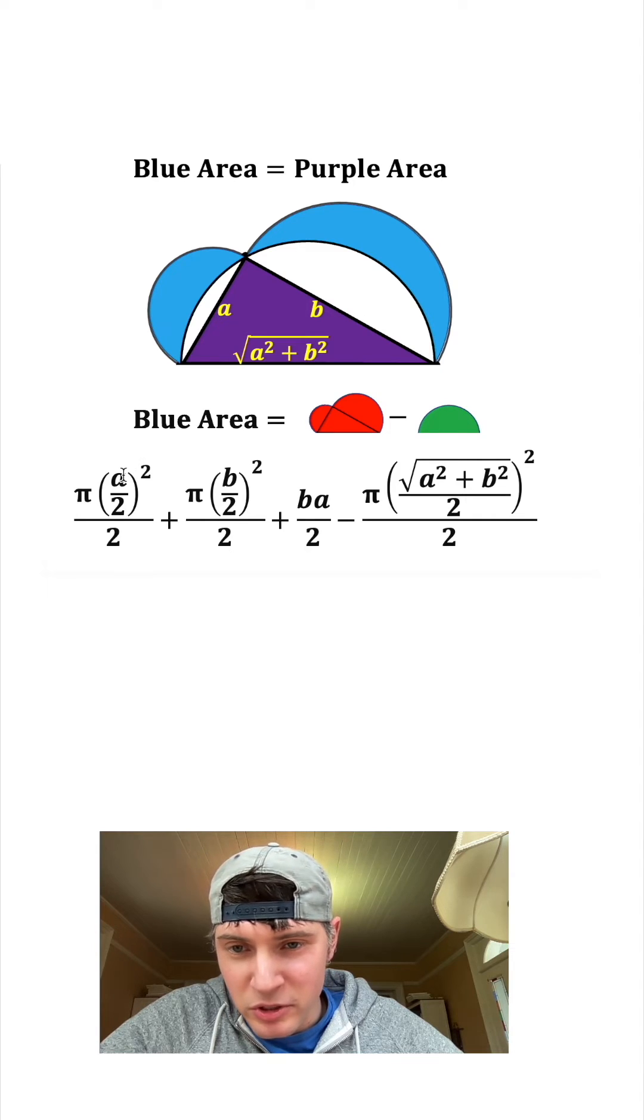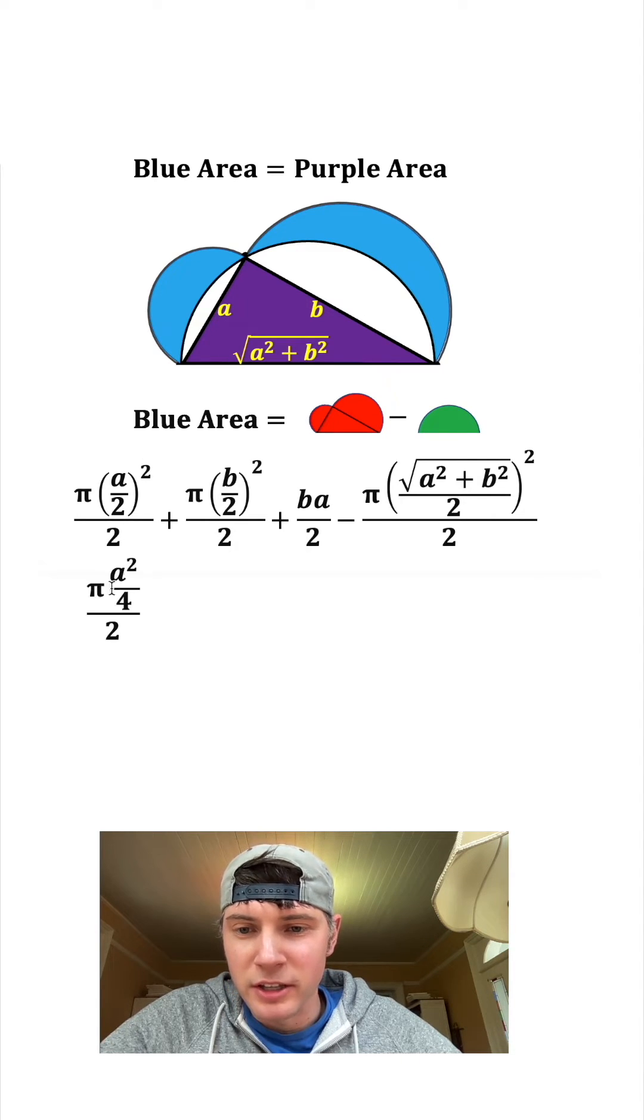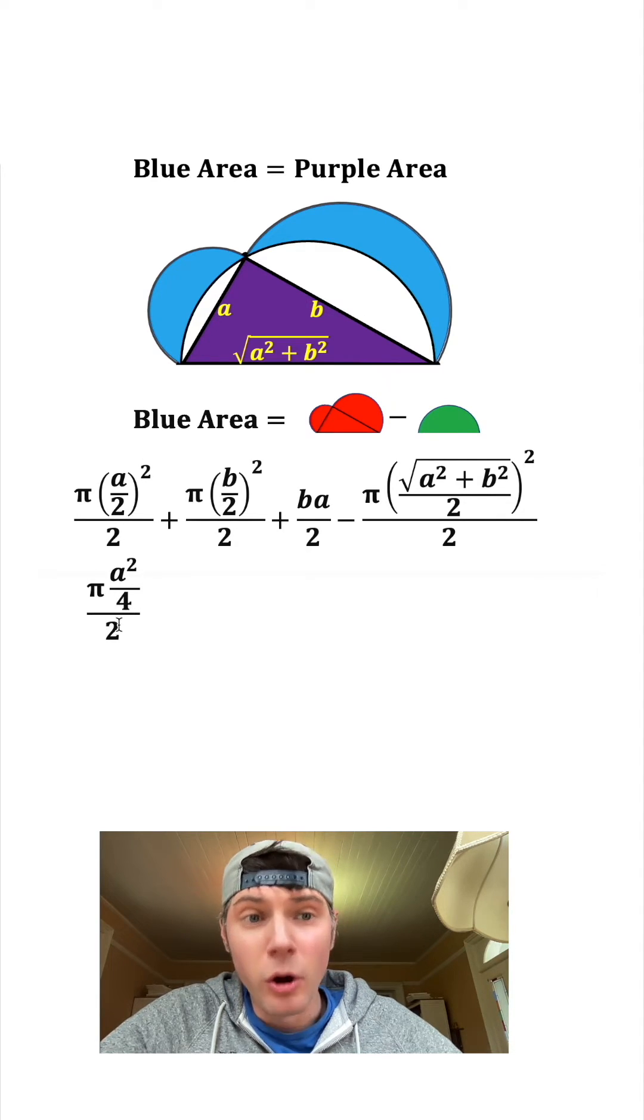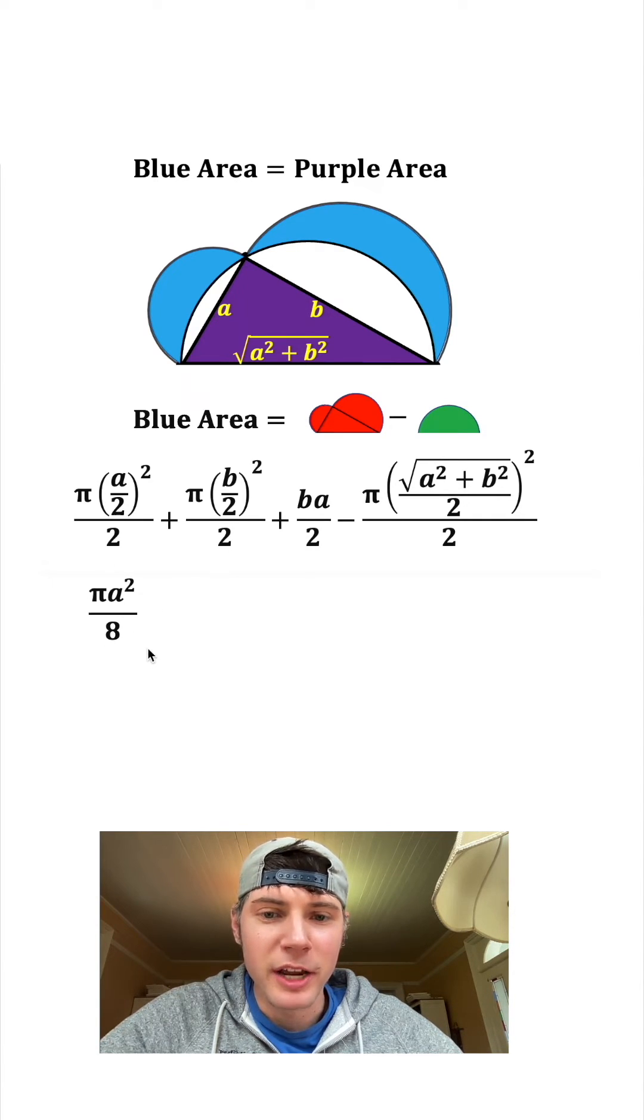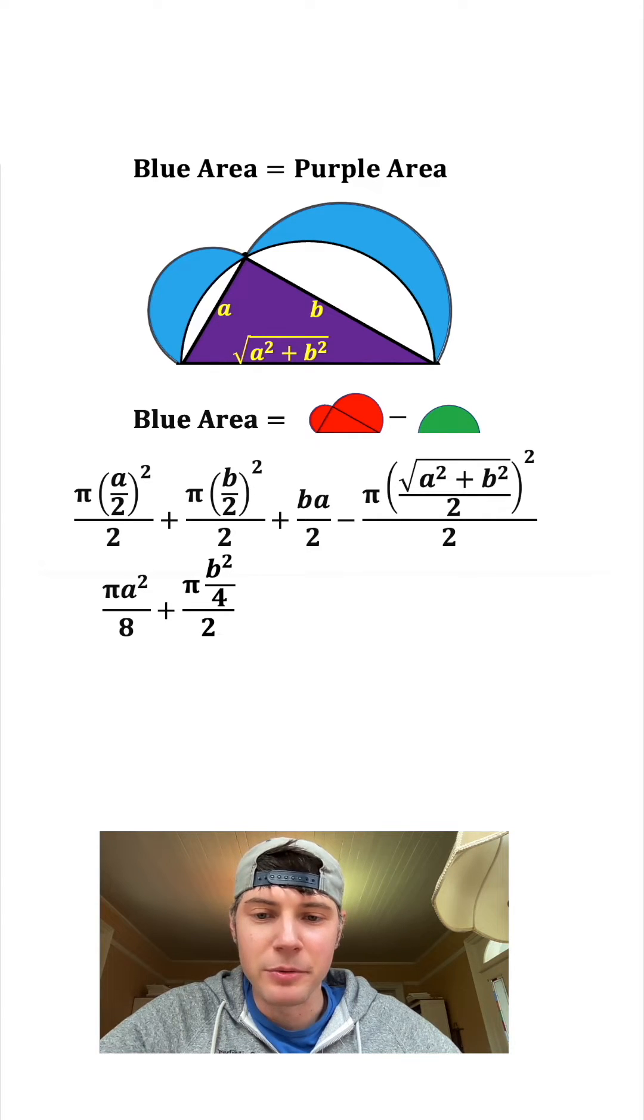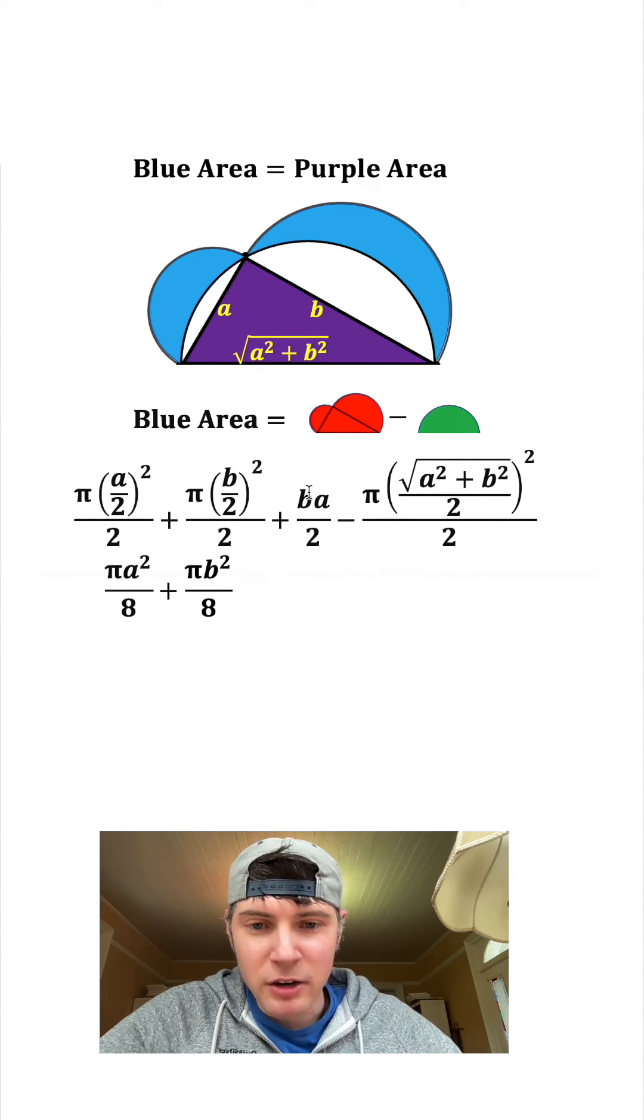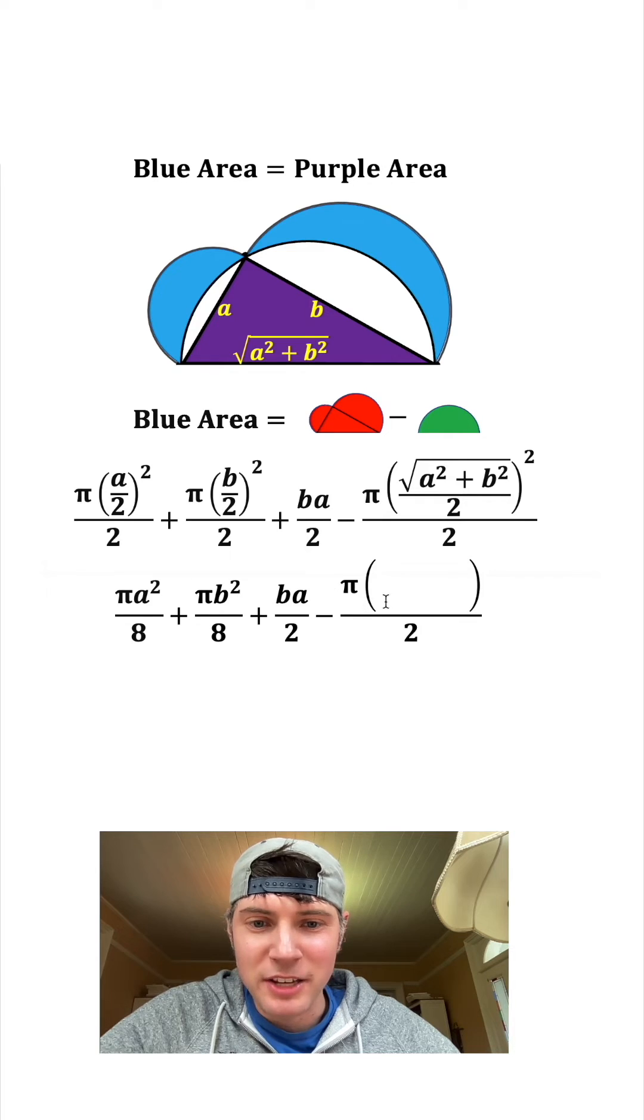Next step, we want to distribute this 2 exponent to both the A and the 2. So it's going to look like pi A squared over 4 over 2. And then we can bring this 4 down here to join the 2, which will just make it all over 8. Same thing with this one right here. And then we can bring this 4 down with the 2 to make it an 8. Just bring this B over 2 down, and then let's subtract this last piece.